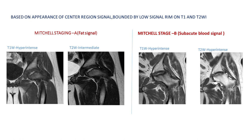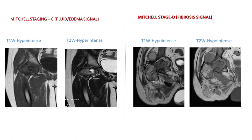There is another staging system called Michel staging, based on the appearance of the central region signal bounded by a low signal rim on T1 and T2 weighted images. Michel stage A follows fat signal — the central region appears T1 hyperintense and T2 intermediate, bounded by a hypointense low signal rim. Michel stage B follows subacute blood signal, appearing T1 hyperintense and T2 hyperintense. Michel stage C follows fluid or edema signal, appearing T1 hypointense and T2 hyperintense. Michel stage D follows fibrosis signal, appearing hypointense in both T1 and T2 images.